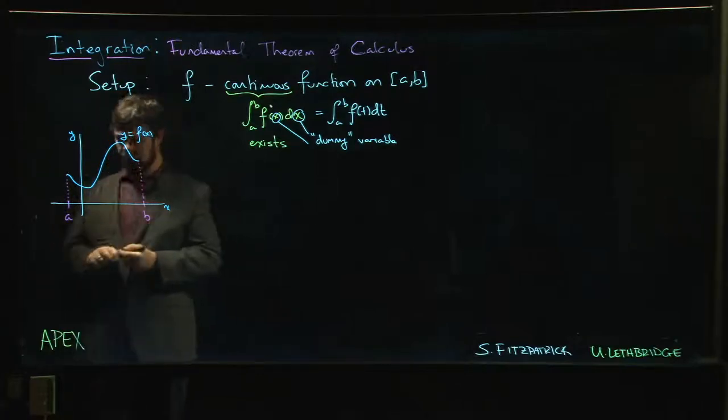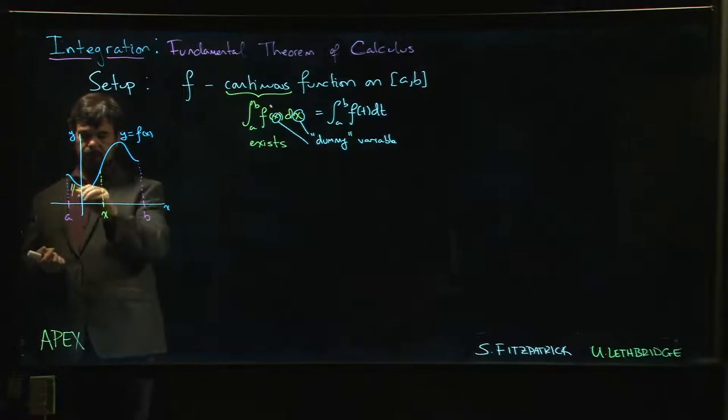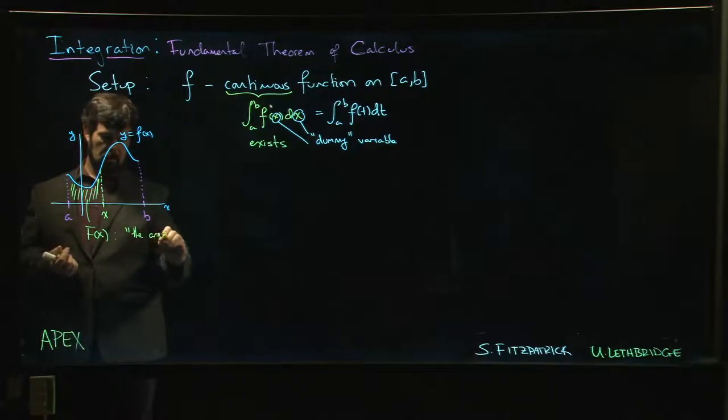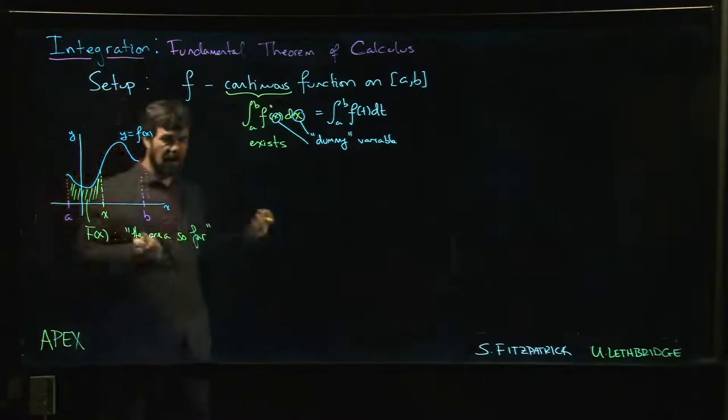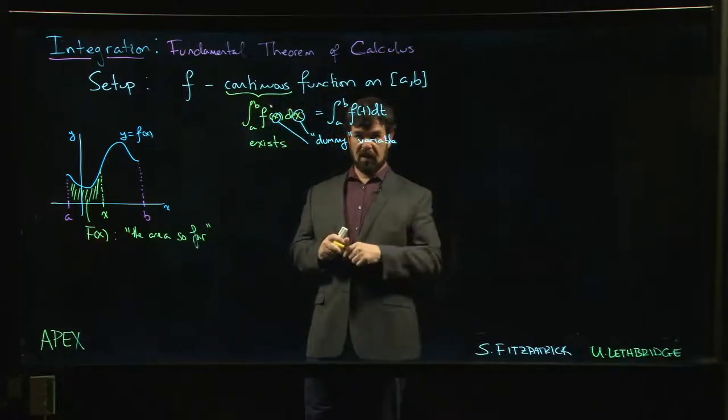So one of the things that you might do is you might introduce some point, not necessarily midway, but somewhere in between a and b - we'll introduce an x. So for any value of x we choose between a and b, we get this area, and we'll give that area a name. We'll call this F(x), and we might call F(x) the area so far, or the area up to x if you want to call it that. And you'll notice I've used function notation. If you think about it for a second, this is a function.